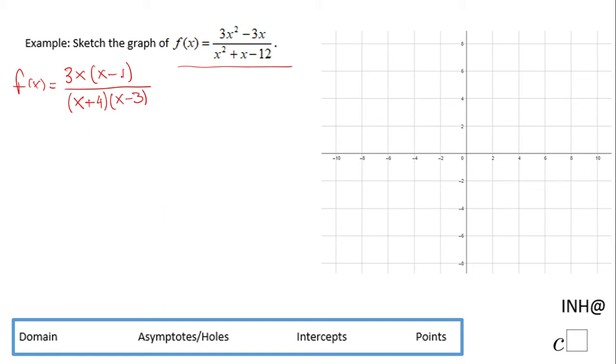Now we're looking and we cannot simplify. That is the reason you want to do this step first. If you can simplify then you have what is called holes in the graph. We don't have any holes here in this case.